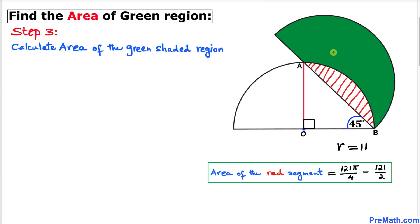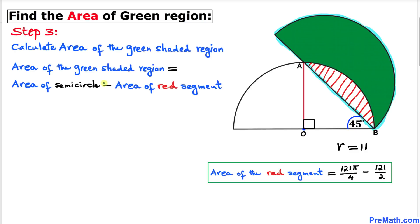The area of this green shaded region can be achieved by calculating the area of this whole semicircle minus the area of this red segment that we have already calculated.